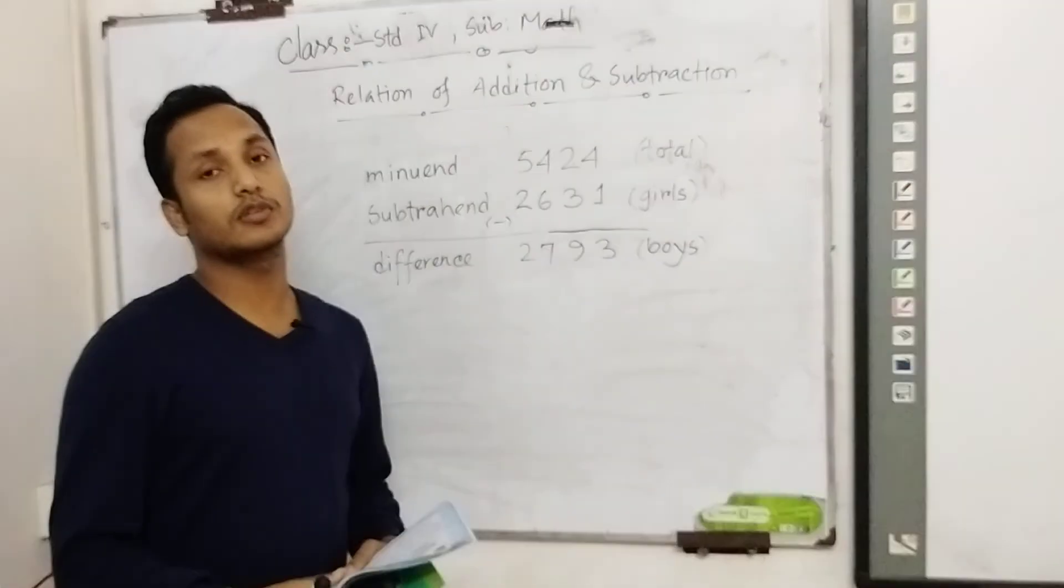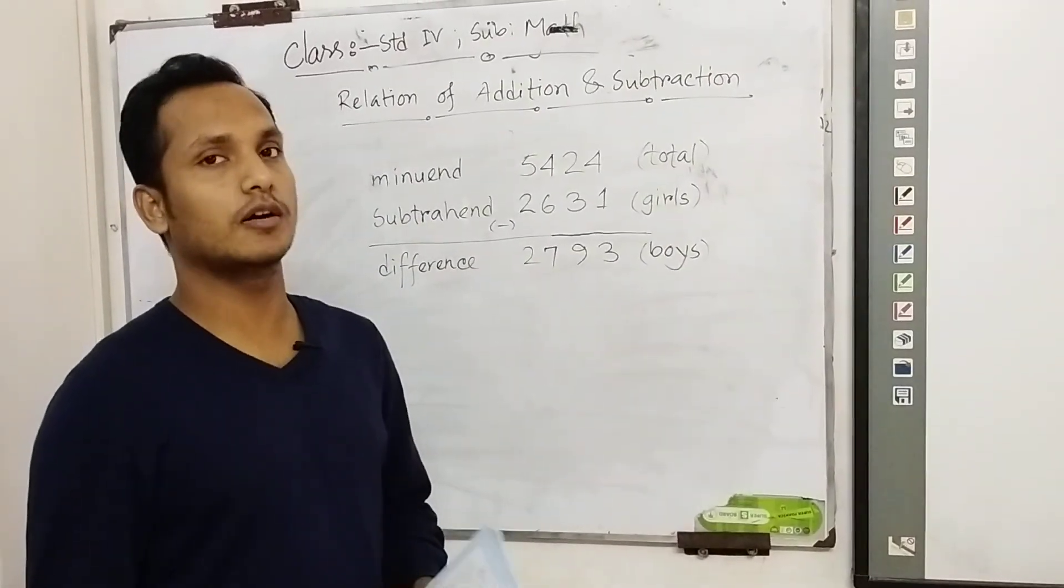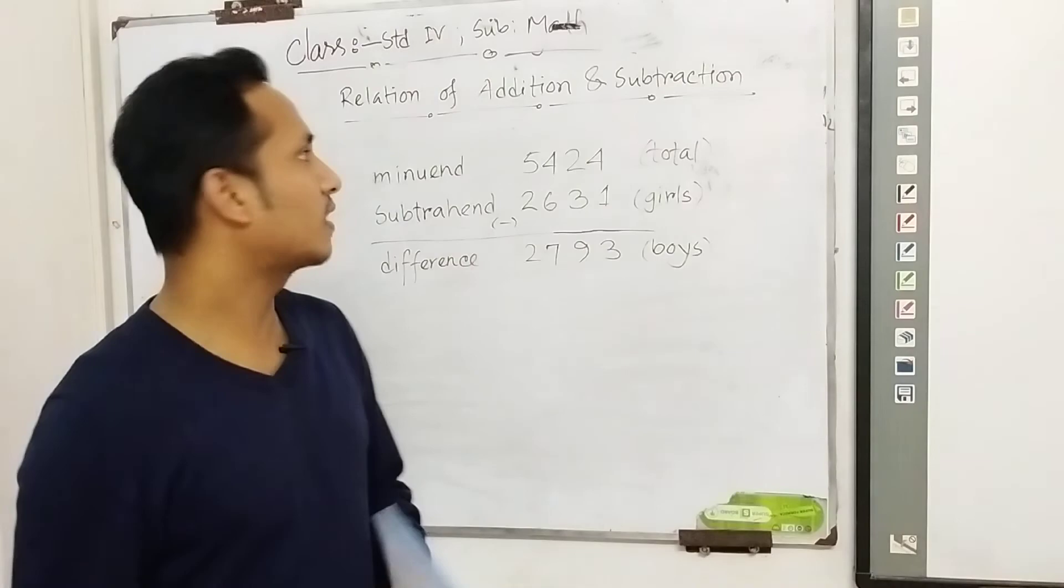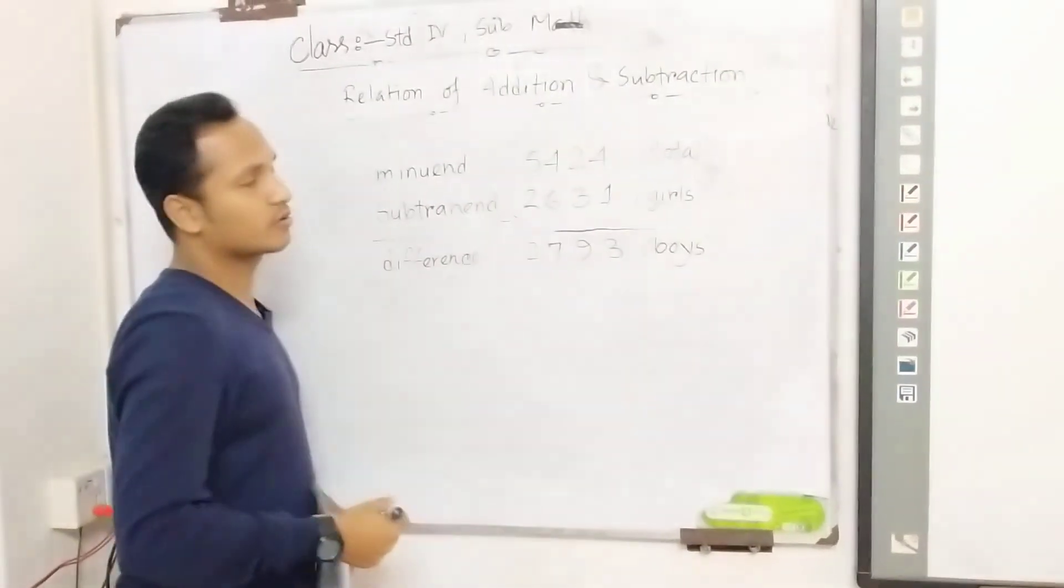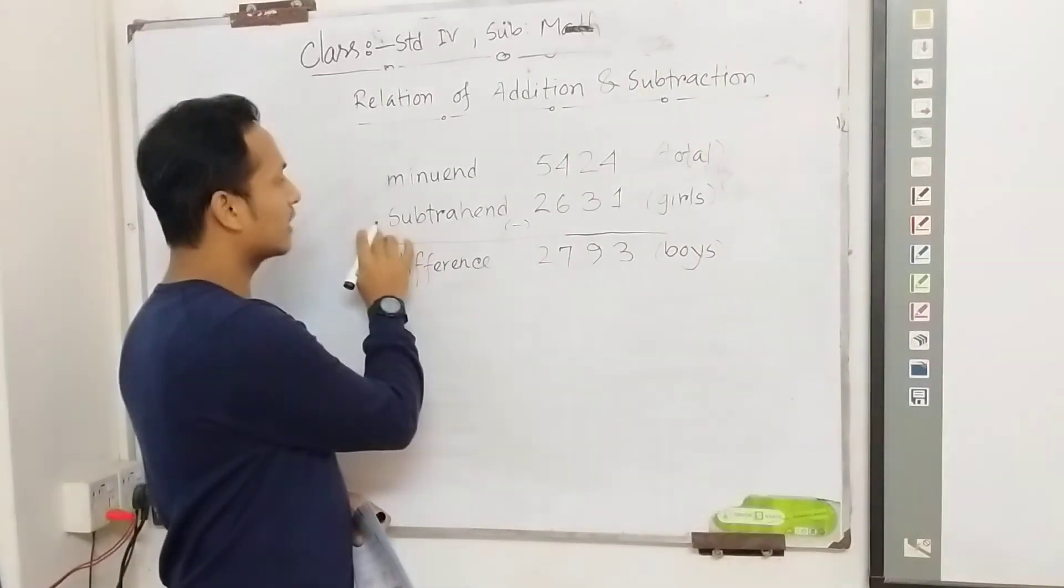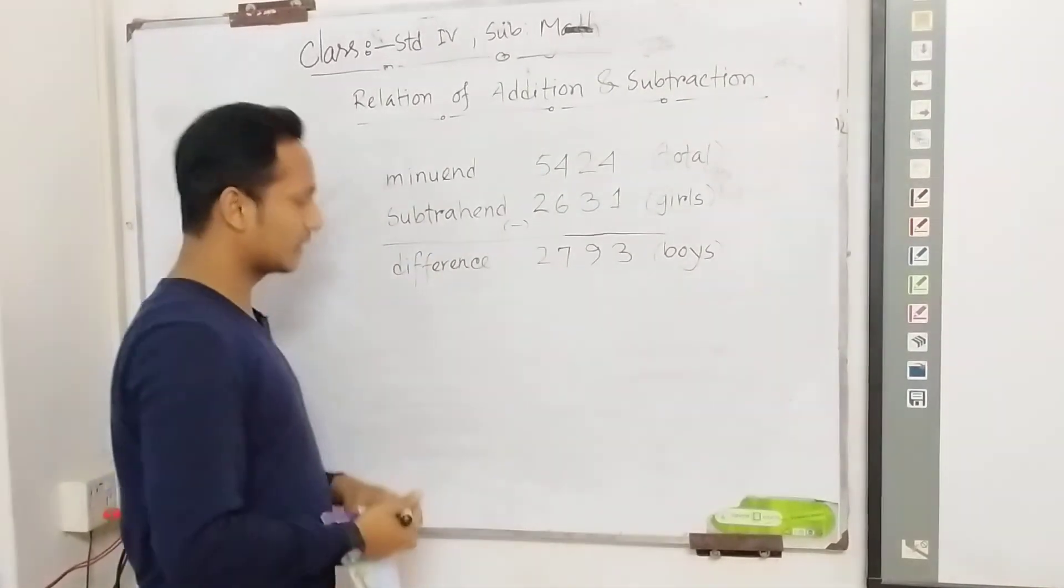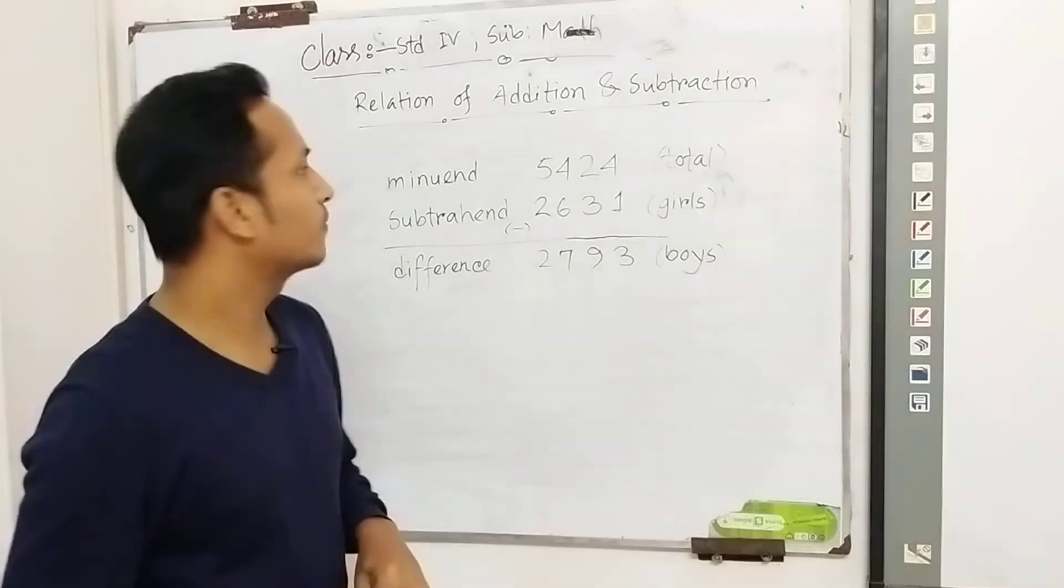First of all, we have to know the parts of subtraction. First one is minuend, second one is subtrahend, and last one is difference. Now, let's look at this.